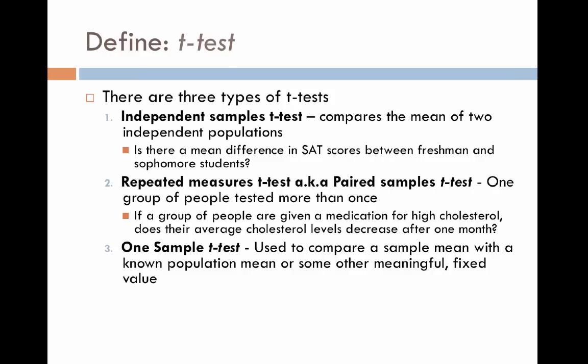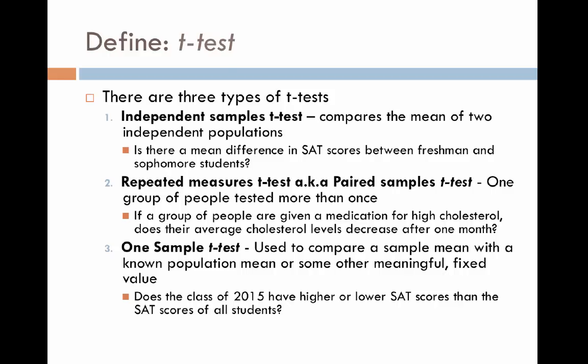Finally, the one-sample t-test is used to compare a sample mean with a known population or some other meaningful fixed value. We would use it only if we're looking at something that's highly studied with lots of data. For example: does the class of 2015 at a particular high school or college have higher or lower SAT scores than the SAT scores of all students across America? We're comparing one population with an already established number. So those are the three types of t-tests.